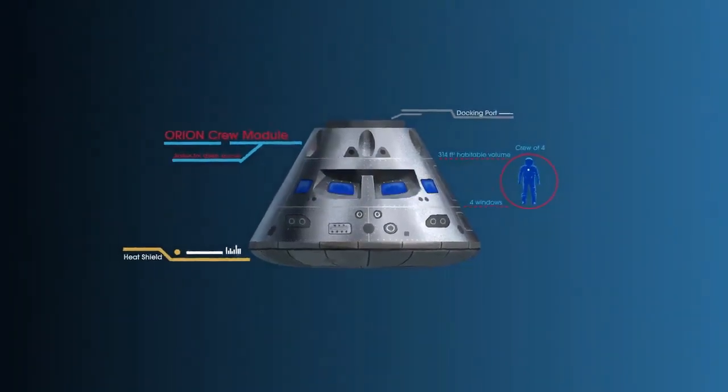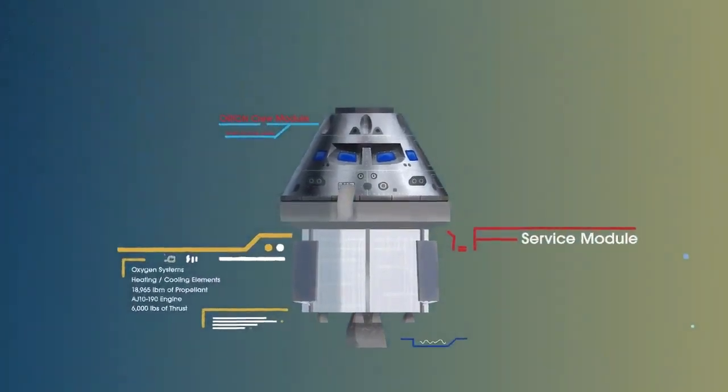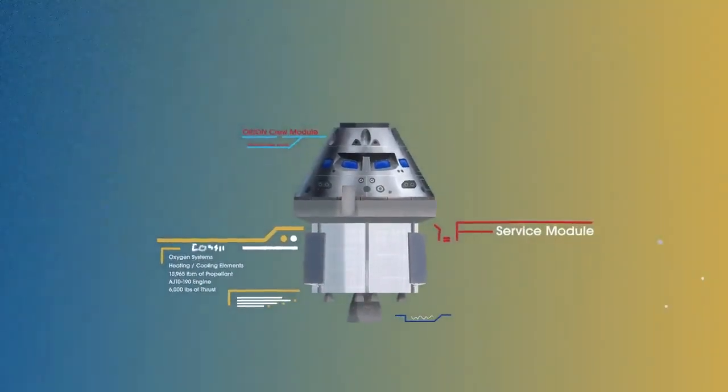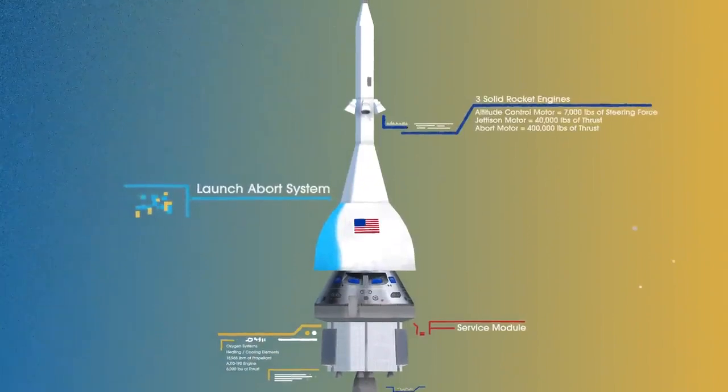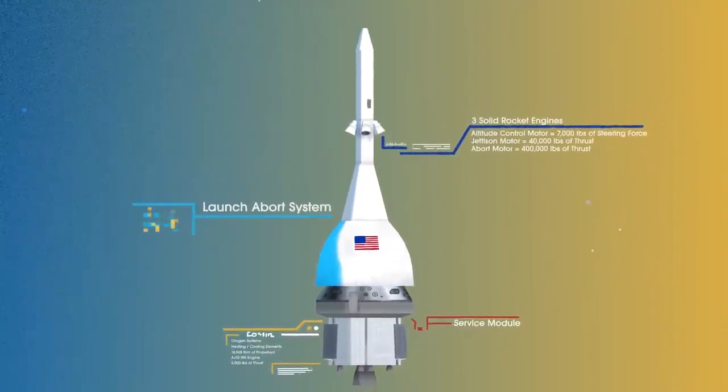The crew module, where up to four astronauts will live and work throughout the flight. The service module, with life-support systems for the crew and its own engine and fuel reserves, and a launch abort system, with engines capable of pulling the crew module to safety during launch should anything go wrong.